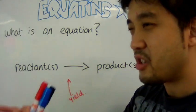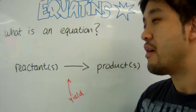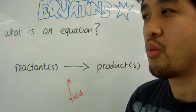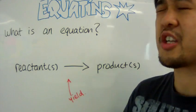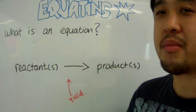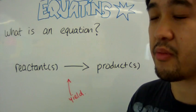Alright. So, an equation is an overview. And so, in any overview, when you do an experiment, you need raw materials. Am I right? You need something to start off with.